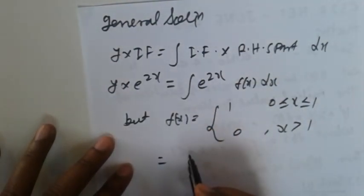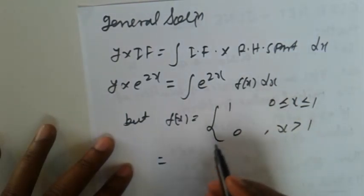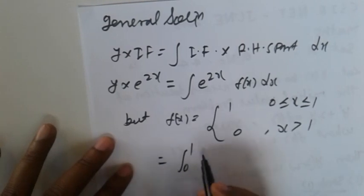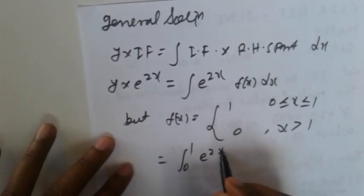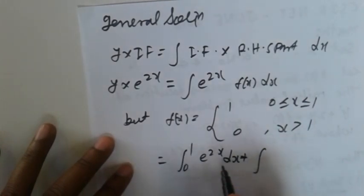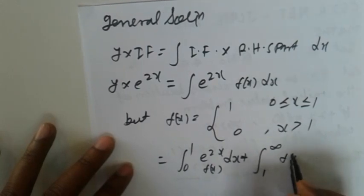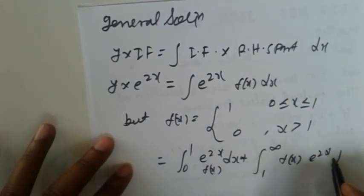Simplifying using the given f(x), we apply the limits and break into two parts: integral from 0 to 1 of e^(2x) times f(x) dx, plus integral from 1 to infinity of f(x) times e^(2x) dx.